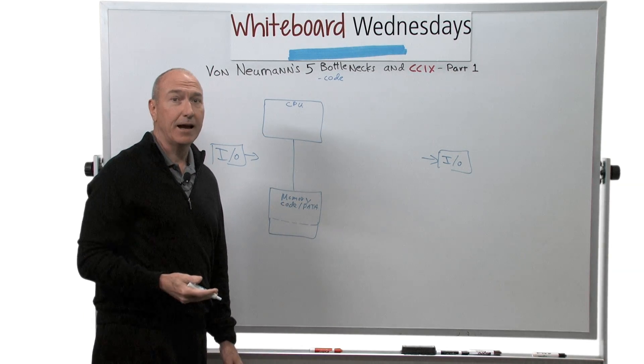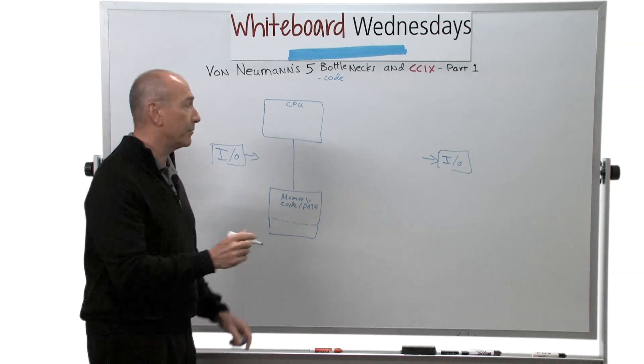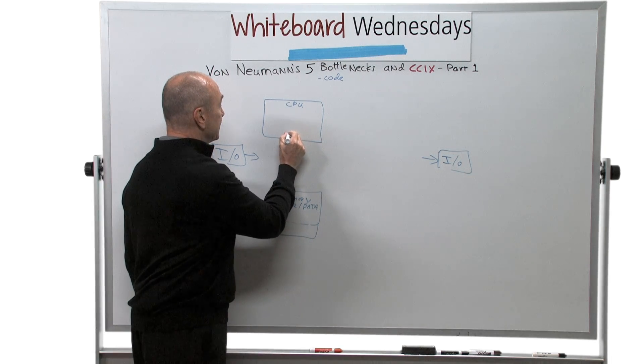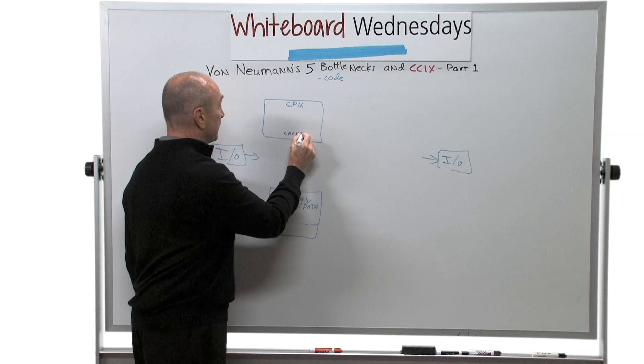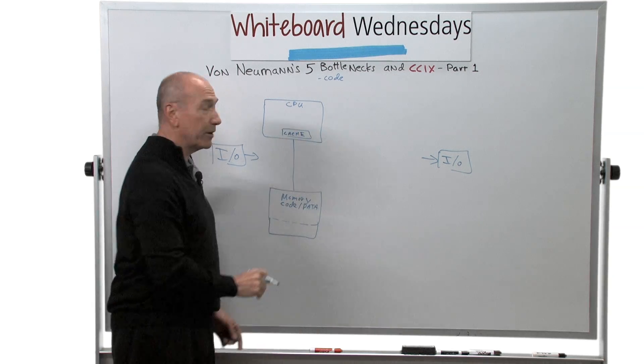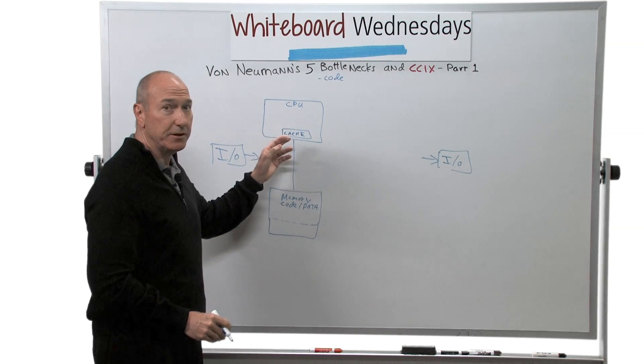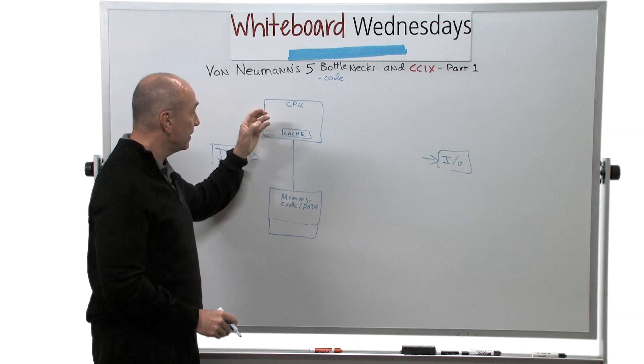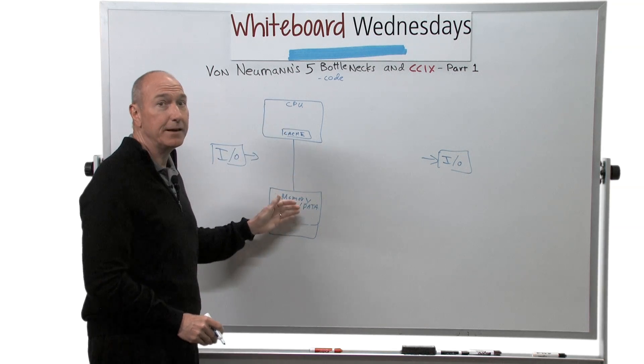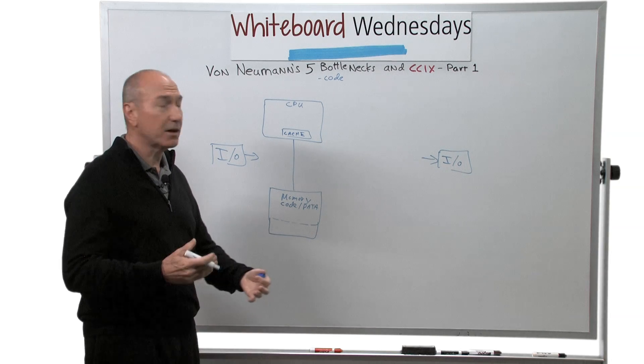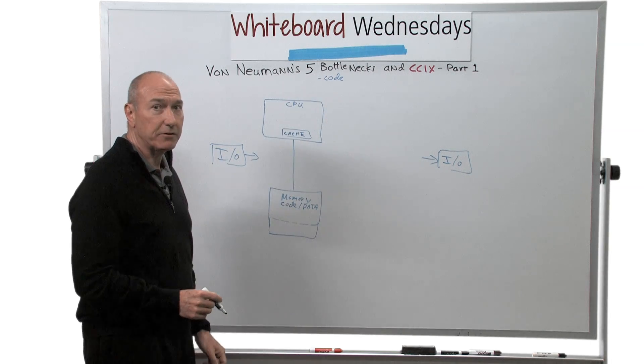And the way to fix that was to give the CPU a little bit of its own memory. And so we call that, of course, the cache, where some of the program code and data can reside in the CPU, can operate on that memory content without going out to main memory. And this got us over this code bottleneck.